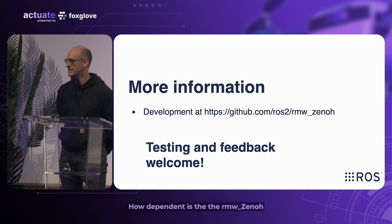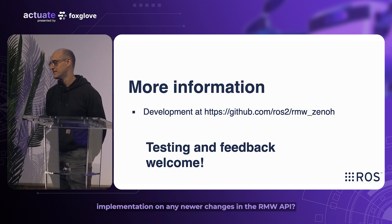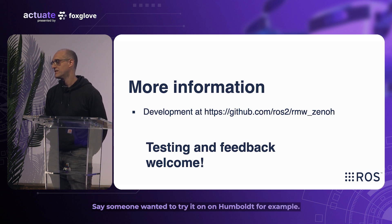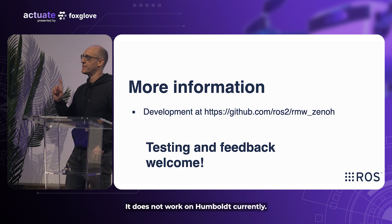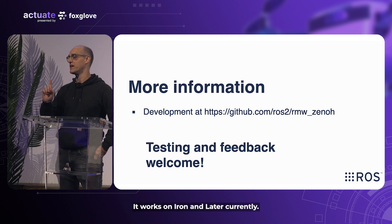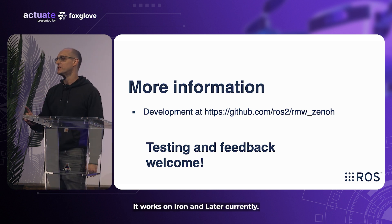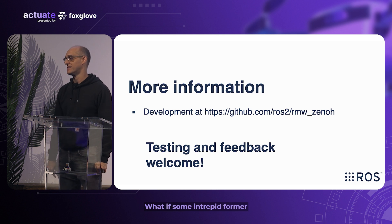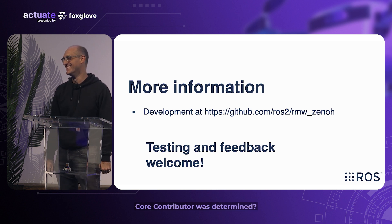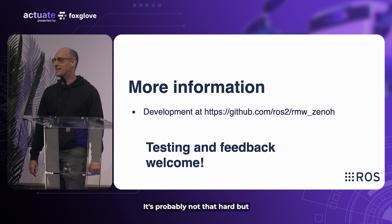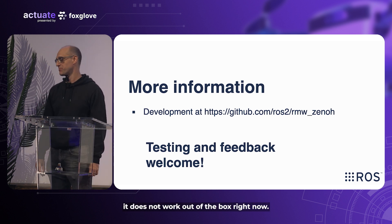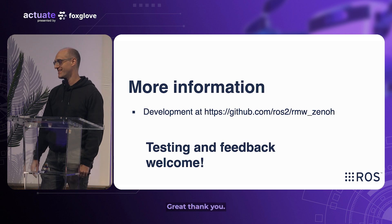Question: How dependent is RMW Zenoh on newer changes in the RMW API? If someone wanted to try it on Humble, for example, how hard would that be? Answer: It does not work on Humble currently — it works on Iron and later. It's probably not that hard to backport, but it does not work out of the box right now on Humble.